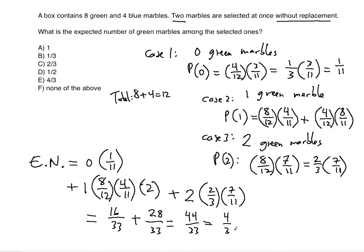So the expected number of green marbles among the selected ones is 4 over 3 — that's answer choice E. Thanks for watching, I'll see you in the next video.